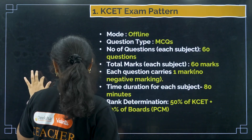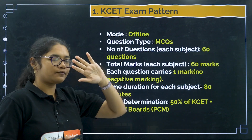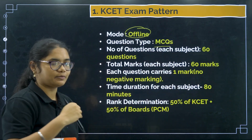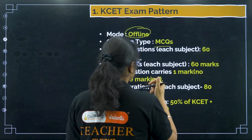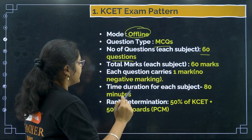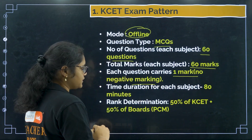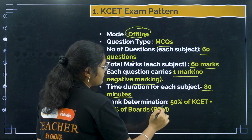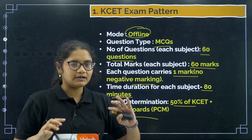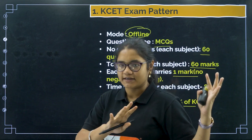Let us get started. First, because we are solving KSA previous year questions, we will have a small glimpse of the exam pattern. The mode of the exam is offline. Questions are MCQs — for every question you get 4 options. Each subject has 60 questions across 3 subjects: Physics, Chemistry, and Mathematics. Total marks for each subject is 60, each question carries 1 mark, and there is no negative marking. Time duration for each subject is 80 minutes, and rank determination depends 50% on KSA and 50% on your PU board marks.